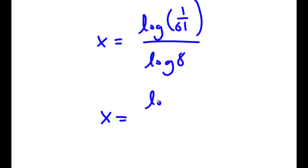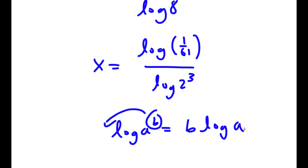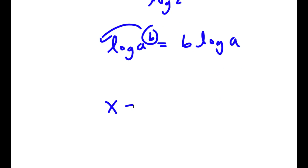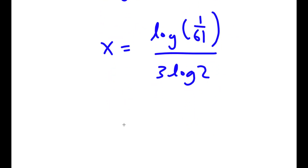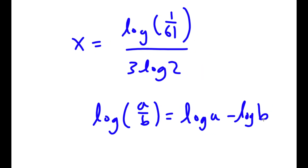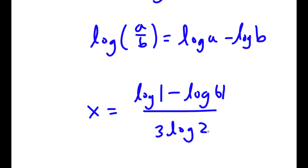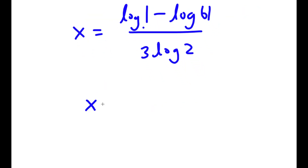Now, log 8 is the same thing as log of 2 to the power of 3. If I have something in the form log a to the power of b, I can move b to the front, so log 2 to the power of 3 becomes 3 times log 2. So now I have x is equal to log of 1 over 61 over 3 times log 2. Now if I have something in the form log a over b, this equals log a minus log b. So log of 1 over 61 equals log 1 minus log 61 over 3 times log 2. Now, log 1 is simply equal to 0. So now I have x is equal to negative log 61 over 3 times log 2.